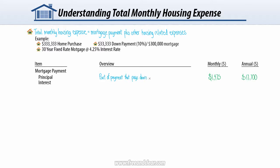Your mortgage payment is comprised of principal, which is the part of your payment that goes to paying down your mortgage balance, and interest, which is the part that goes to paying the lender for borrowing money. Principal and interest are often called P&I for short. With a fixed-rate mortgage, your monthly mortgage payment does not change over the life of the loan, but the split between principal and interest does change — consisting mostly of interest at the beginning and mostly principal at the end.